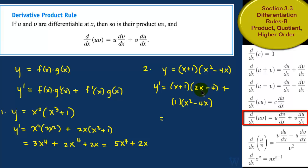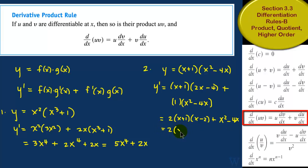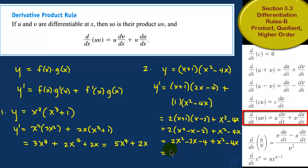This can be simplified by multiplying x plus 1 times 2x minus 4. Notice that 2 is a common factor, so I can pull that out and say 2 times x plus 1 times x minus 2, plus x squared minus 4x. This is equal to 2 times the quantity x squared minus x minus 2, plus x squared minus 4x, which gives 2x squared minus 2x minus 4 plus x squared minus 4x, and combining like terms the final answer is 3x squared minus 6x minus 4.